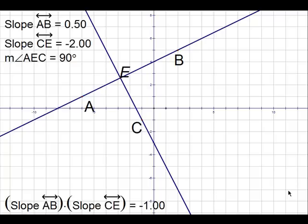For this investigation, it's easier to look at the slopes as fractions. So we know that the fraction for 0.5 is 1/2 and we also want to write negative 2 as a fraction, so that would be negative 2 over 1.